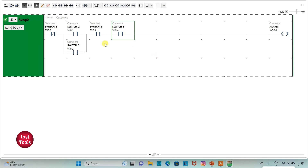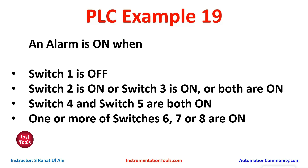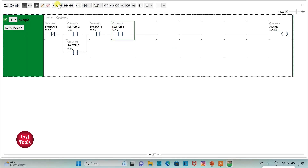So we have connected switch 4 and switch 5 in series, meaning when switch 4 and switch 5 are both on, alarm will be on. Then one or more of switches 6, 7, or 8 are on, so we will use normally open contacts for switch 6, switch 7, and switch 8 and connect them in parallel, implementing an OR gate.